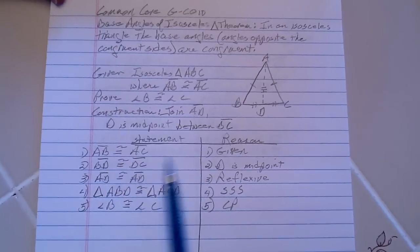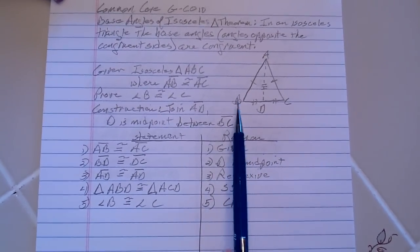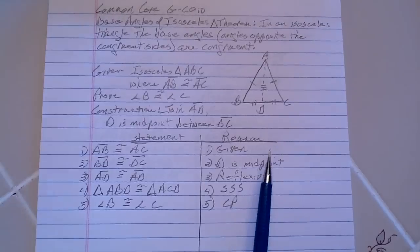And that BD and DC are congruent because that's a midpoint, so if it's a midpoint, it's been cut in half.